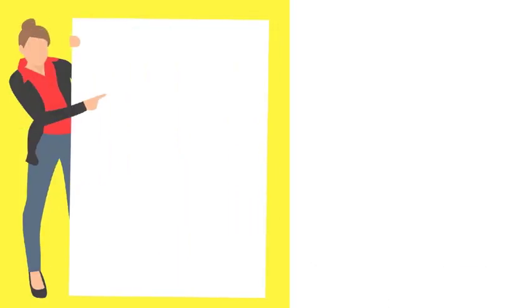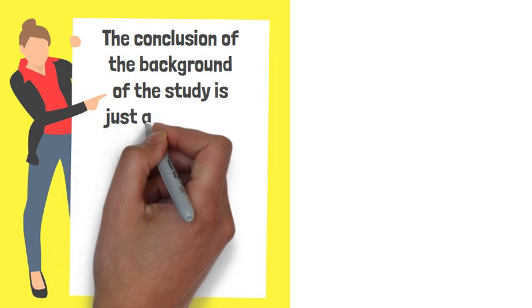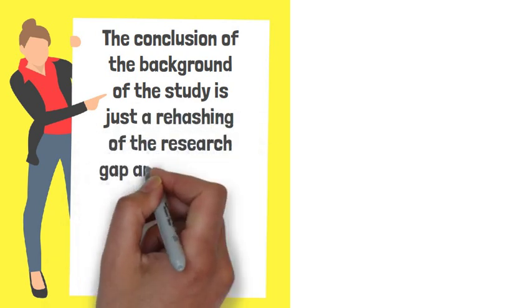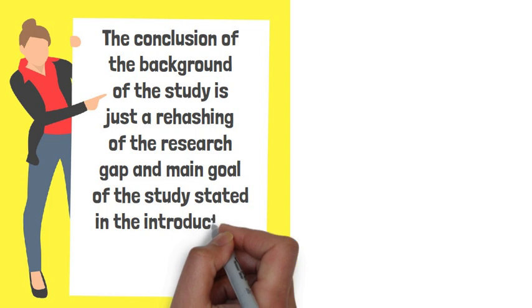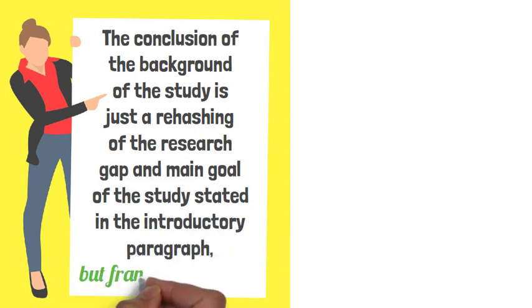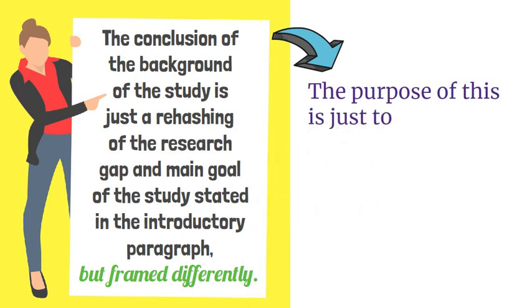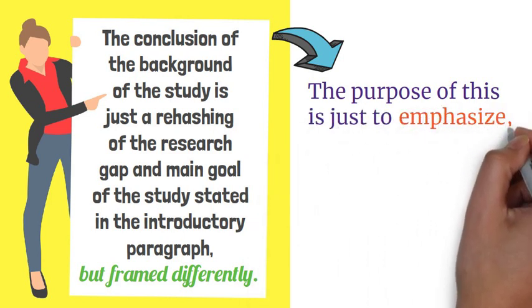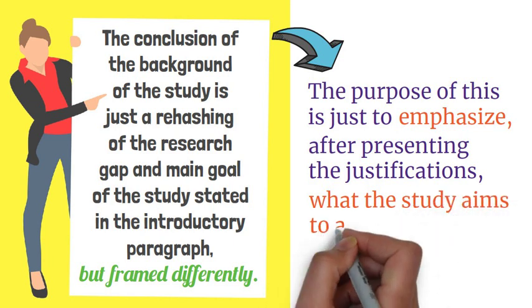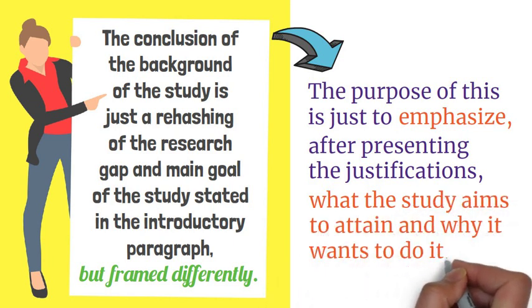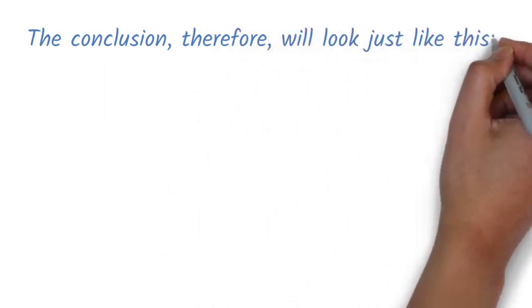It is important to note that the conclusion of the background of the study is just a rehashing of the research gap and main goal of the study stated in the introductory paragraph, but framed differently. The purpose of this is just to emphasize, after presenting the justifications, what the study aims to attain and why it wants to do it. The conclusion, therefore, will look like this.